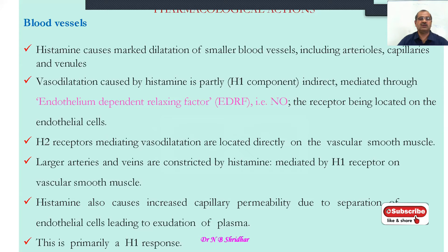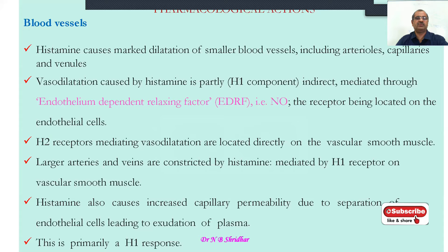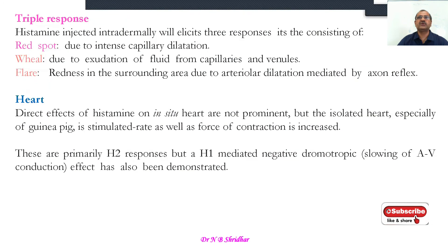H2 receptors are very specific to the gastric parietal cell and are involved in gastric hydrochloric acid secretion. Histamine also causes increased capillary permeability by separation of endothelial cells, leading to exudation of plasma. The wheel and flare response occurs in allergy — this is known as the triple response. Inflammatory cells and exudates ooze out, primarily an H1 receptor response. In allergy-induced responses, H1 receptor antagonists, also known as antihistamines, are administered.